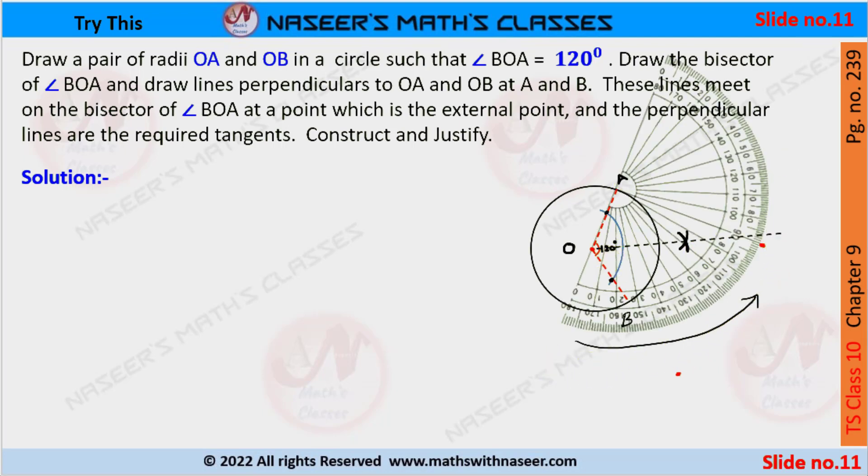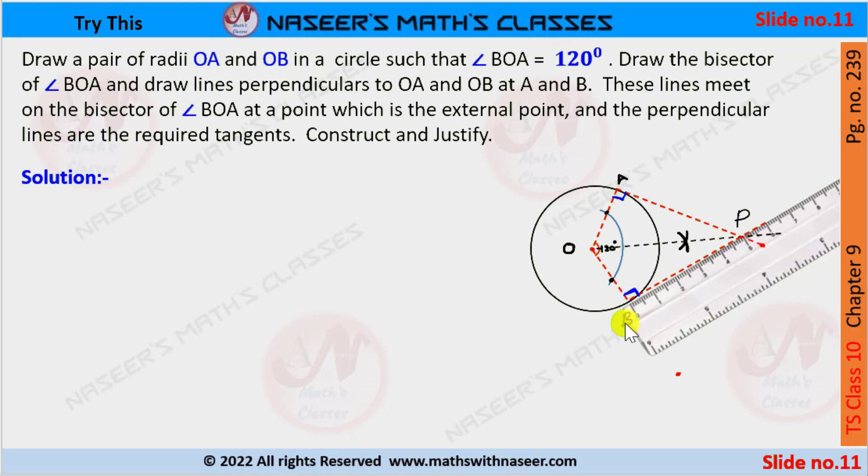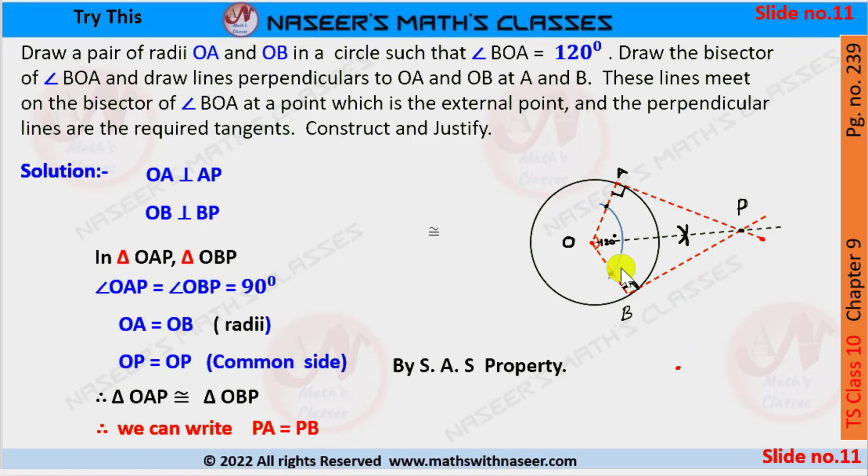With OA as the base, make an angle of 90 degrees. Join A and the 90-degree point using a ruler to get point P. Now join points B and P using the ruler.